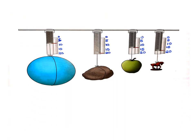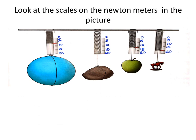Another example, which is inside your student book on page 66. I have a foam ball — foam is very light — a piece of stone, an apple, and a small metal horse. Look at the scales on the Newton meters in the picture. The foam ball points to about 7 or 8 Newton.